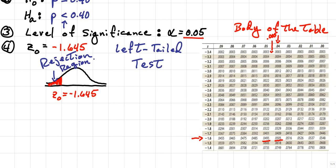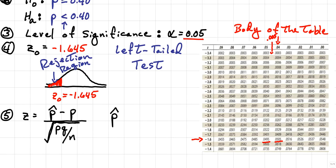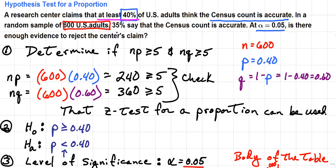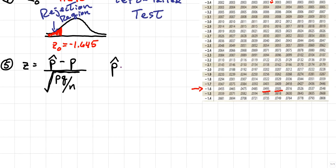Now I need to determine the standardized test statistic, z. Z is given by the formula: p-hat minus p divided by the square root of p times q divided by n. This will give me the value to determine whether I can reject the claim. We know what p is, what q is, and what n is. But what is p-hat? P-hat is the original sample percentage, which is 0.35.